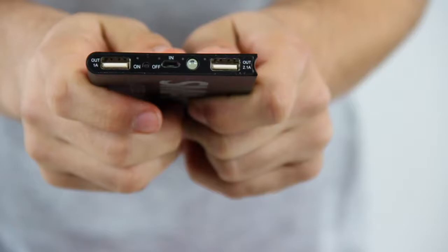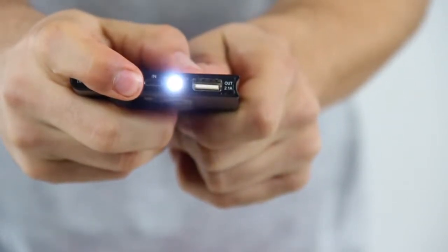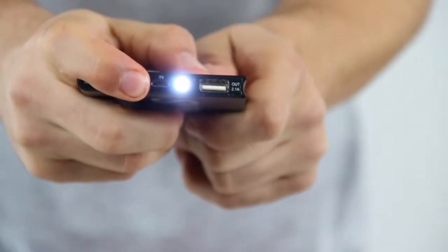Locate the on off button on your battery. The battery will turn on with a two second hold. You'll know it's on when you see a bright white light next to the on off button.